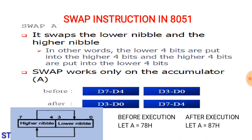For example, let A equal to 78H before execution of SWAP instruction. After execution of SWAP instruction, the lower and higher order are swapped, and it becomes 87H.